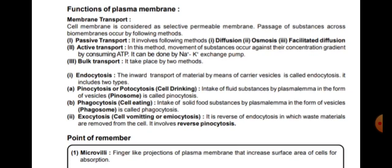Passive transport involves diffusion, osmosis, and facilitated diffusion. Simple diffusion and osmosis both occur from higher to lower concentration across the membrane, whereas in facilitated diffusion, certain proteins or porins help in transportation. In active transport, movement of substances occurs against the concentration gradient, consuming ATP, from lower to higher concentration — for example, the sodium-potassium ion exchange pump.